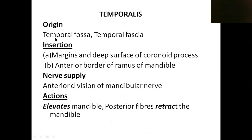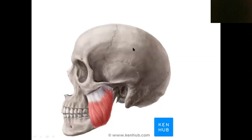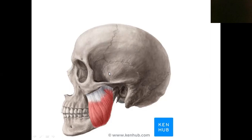Now the temporalis muscle. It arises from the temporal fossa and the temporal fascia. This area seen above the zygomatic arch is the temporal fossa. The temporal fascia is a fibrous sheet covering this region. Most fibers arise from the temporal fossa and some fibers arise from the temporal fascia covering it.